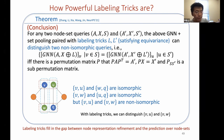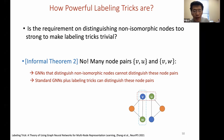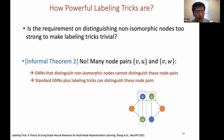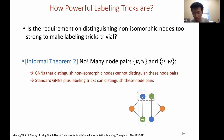One may ask whether the requirement of distinguishing non-isomorphic nodes is too strong to make labeling tricks trivial — the answer is no. In the paper we show that even without the most expressive GNN, there are many non-isomorphic node pairs (like (v,u) vs. (v,w)) that GNNs capable of distinguishing all non-isomorphic nodes cannot distinguish as pairs — but a standard GNN with labeling tricks can distinguish them.